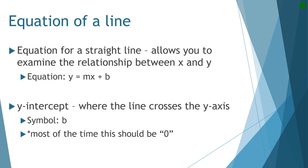The equation of a straight line follows the format y equals mx plus b. Y is the value of y at a data point, x is the value of x at that data point, m is the slope — the relationship between the change in y over the change in x — and b is your y-intercept, which is where the line crosses the y-axis. Most of the time in this class it will be zero, but not always, so don't assume that.